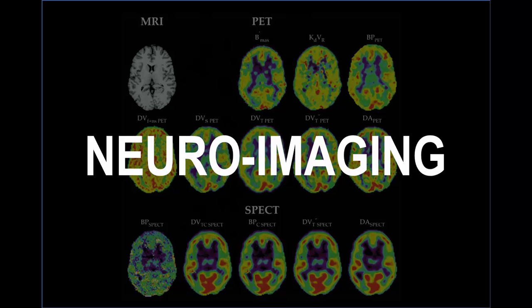For the most part, overt brain disease and injuries can be identified using these modalities, but the same is not the case for many mental disorders at present. Functional imaging techniques are continuing to improve, and various mental disorders are now becoming more recognizable.